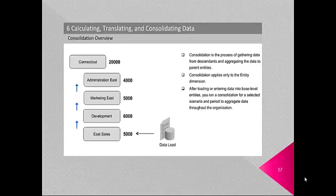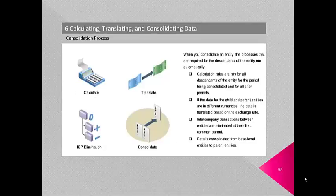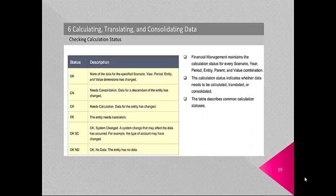Consolidation is a process of gathering data from descendants and aggregating it to parent entities; it applies only to the entity dimension. After loading or entering data into base level entities, you run a consolidation for a selected scenario and period to aggregate data throughout the organization. When you consolidate an entity, processes required for all descendants run automatically. Calculation rules run for all descendants for the period being consolidated and all prior periods. If the child and parent entities are in different currencies, data is translated based on the exchange rate. Intercompany transactions between entities are eliminated at their first common parent. Financial Management maintains calculation status for every scenario, year, period, entity, parent and value dimension combination.